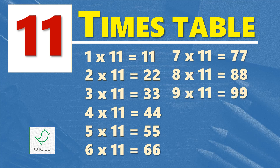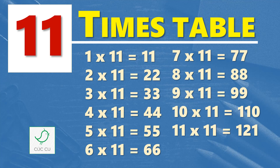Nine times eleven are ninety-nine, ten times eleven are one hundred and ten, eleven times eleven are one hundred and twenty-one, twelve times eleven are one hundred and thirty-two.